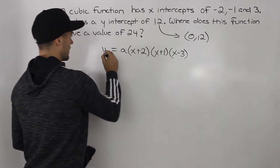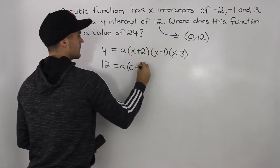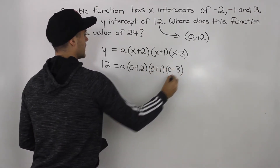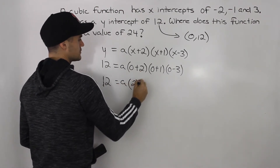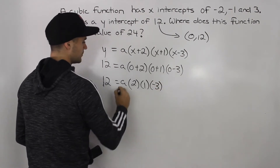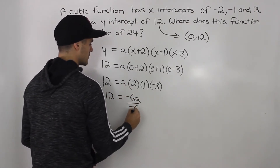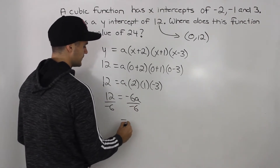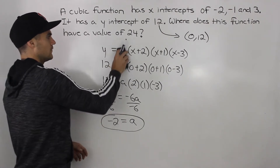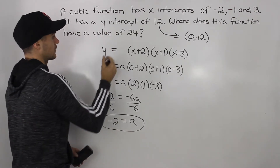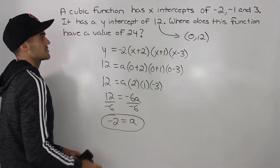A y-value of 12 occurs when x = 0. So we plug in 0 for all the x's and 12 for y. We get: 12 = a(0 + 2)(0 + 1)(0 − 3). That gives us 12 = a(2)(1)(−3) = −6a. Dividing both sides by −6, a = −2. So the equation of the cubic function is y = −2(x + 2)(x + 1)(x − 3), using the y-intercept of 12 to solve for a.